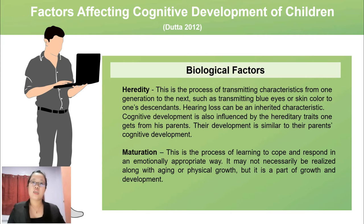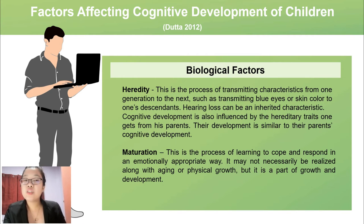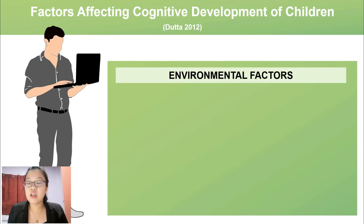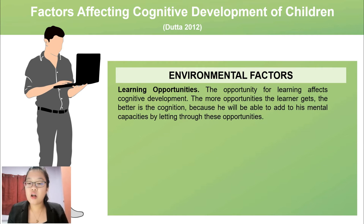The last biological factor is maturity or maturation — the process of learning to cope and respond in an emotionally appropriate way. It may not necessarily be realized along with aging or physical growth, but it is part of growth and development. The second main factor is environmental factors, which includes surroundings, conditions, or influences that affect an organism — physical, biological, social, cultural, and spiritual.